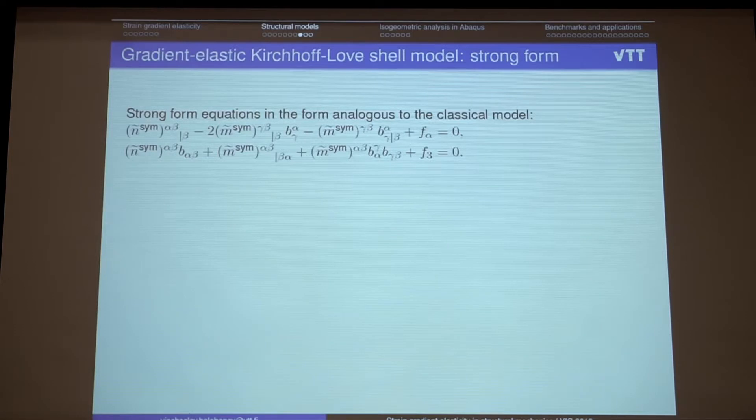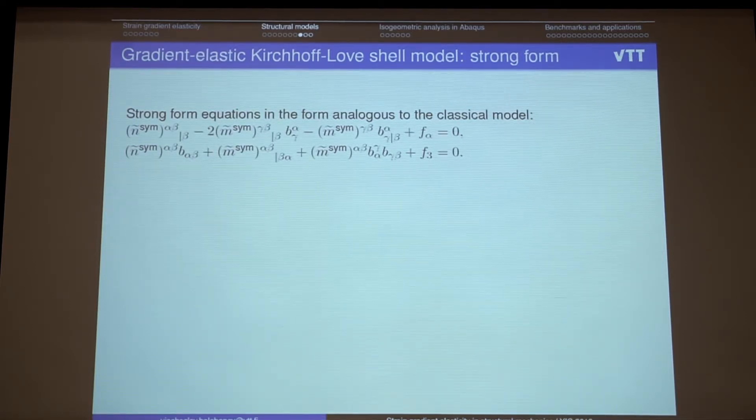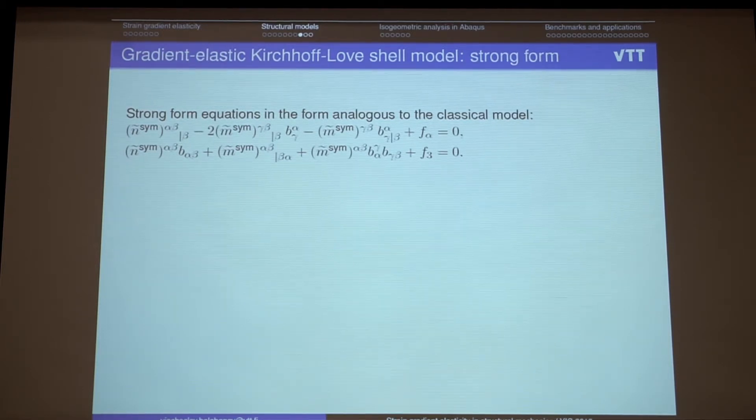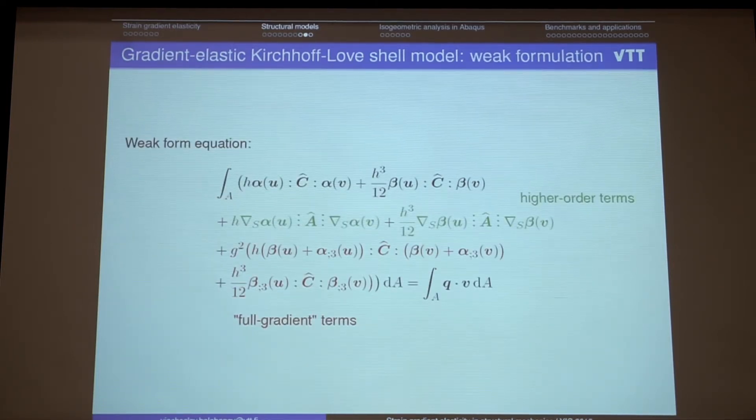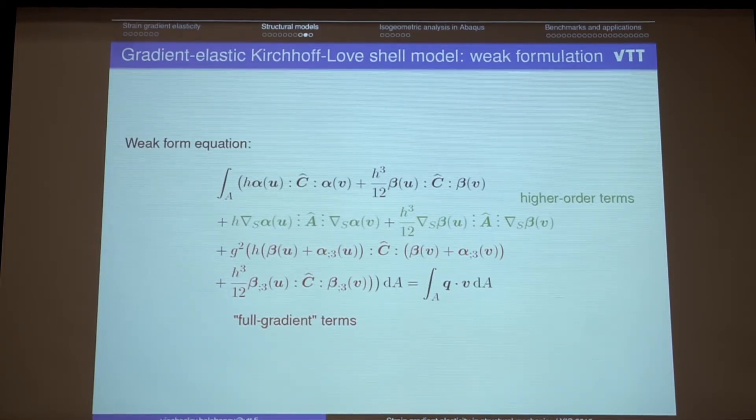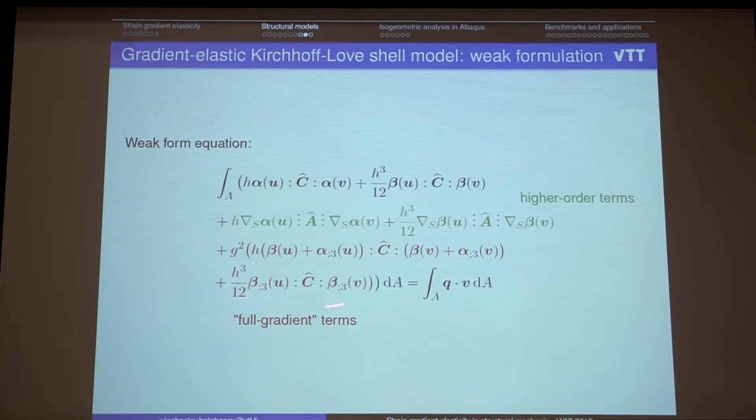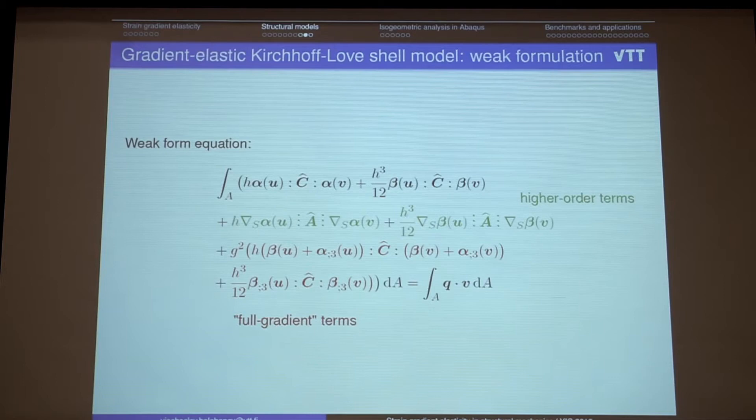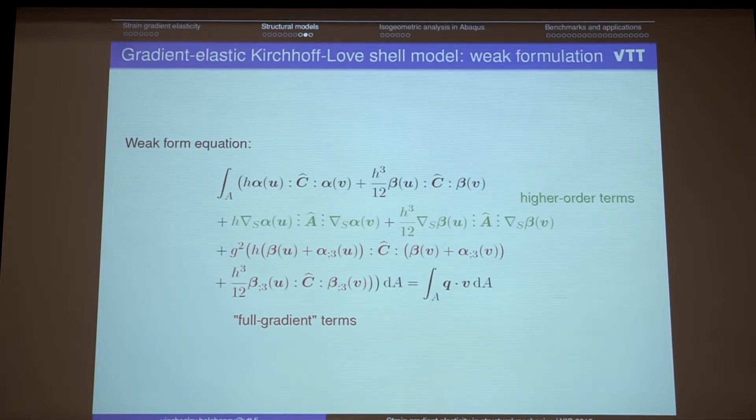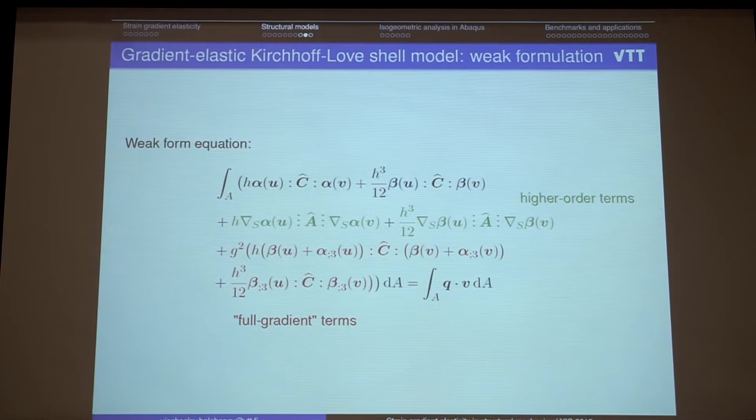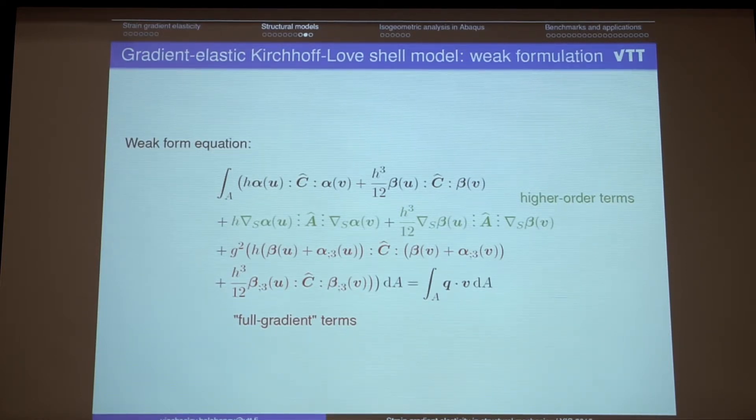Some convergence curves. Let's go now to the Kirchhoff-Love shell model. So this model was derived for the first time in the framework of strain gradient elasticity. Maybe I should skip all the mathematical details. Just want to say that all the results which we obtained for the beam models we also take into account for the shell model. Meaning these full gradient terms. And these full gradient terms they give... So in classical shell model we have the energy which can be divided to the membrane part and to the bending part. And it seems that for gradient elasticity we don't have this decoupling anymore. Which should be also taken into account when we write the variational formulations.